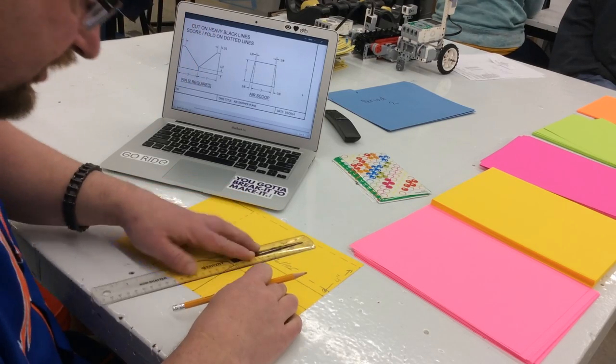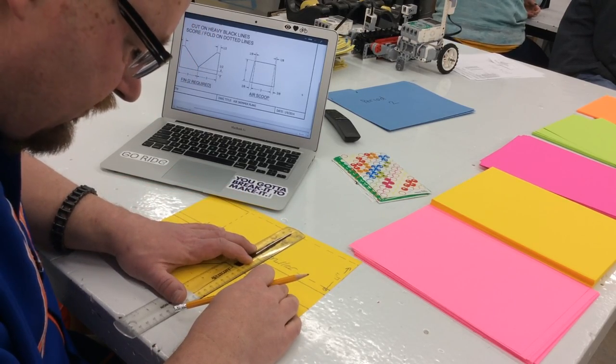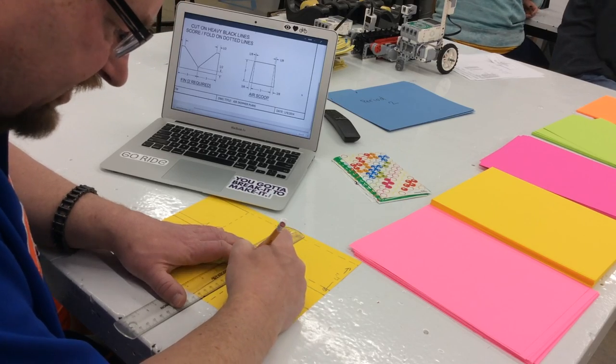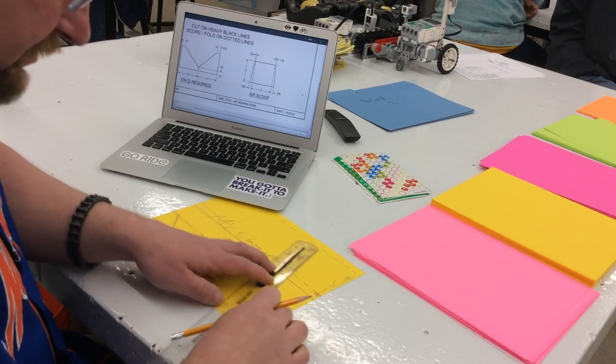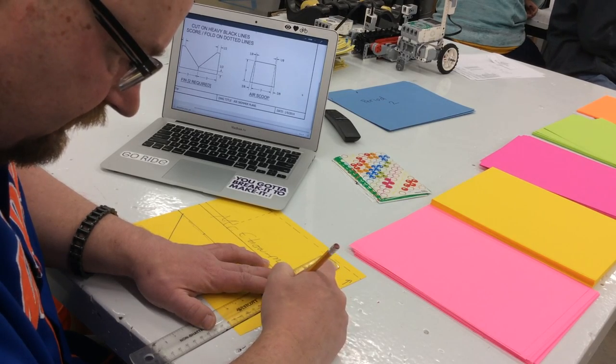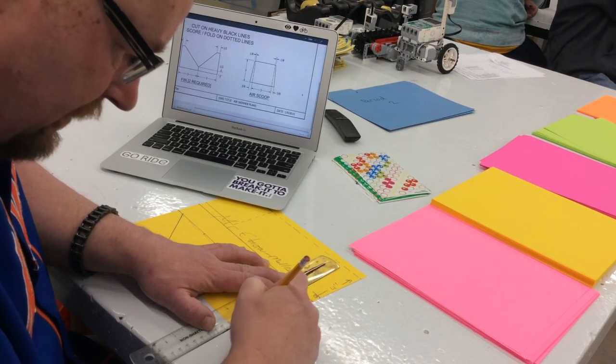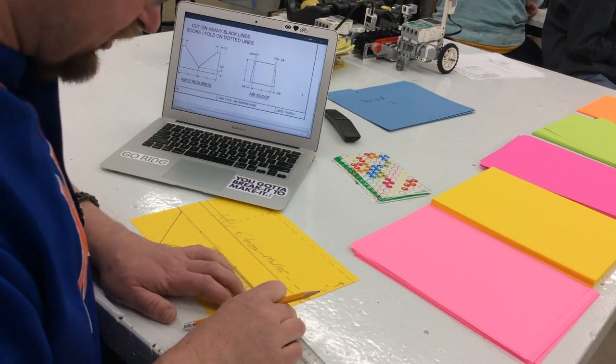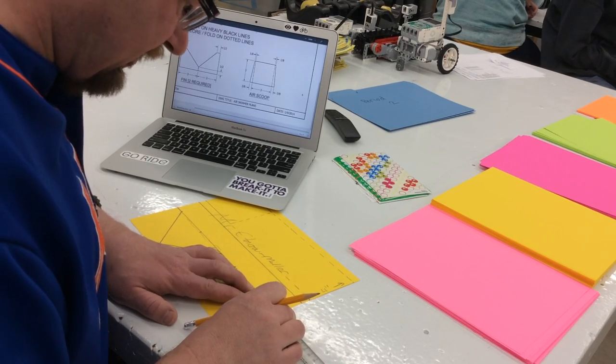Now the last part is just to connect those dots from the 1 eighth at the top to the 3 eighths at the bottom. 1 eighth at the top to the 3 eighths at the bottom. And I'll try to darken in the part that is actually our air scoop.